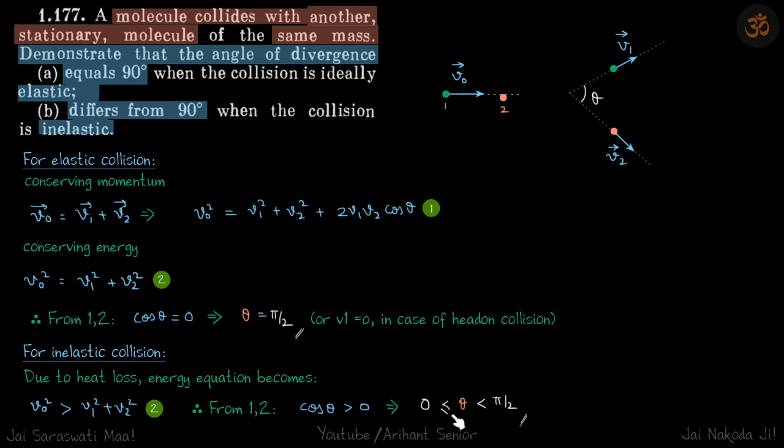Which means theta should be between zero and pi by 2. Just remember, these are the cases only when they are of equal masses. If they are not of equal masses, neither of these equations will be true.